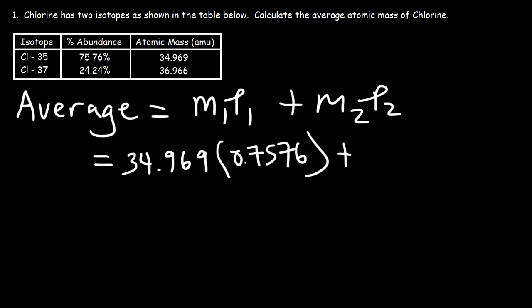Now the mass of the second isotope, chlorine-37, is 36.966 times the percentage as a decimal which is 0.2424. So go ahead and type this in your calculator: 34.969 times 0.7576, and then plus 36.966 times 0.2424.